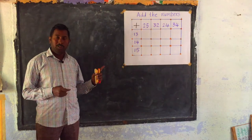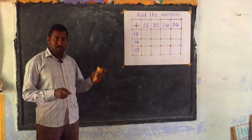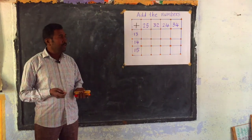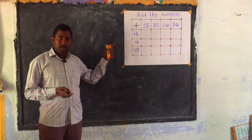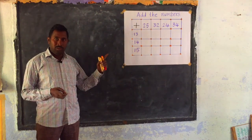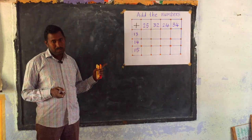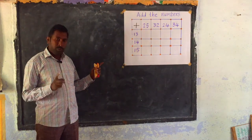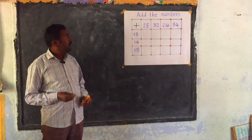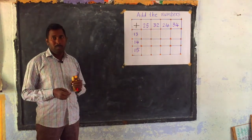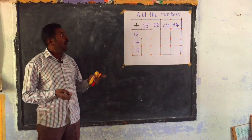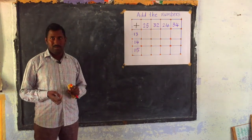You will see this activity chart in your textbook page number 55. All of you open your textbook, children, and find this activity chart. Did you find this activity chart in your textbook, children? In page number 55, you can find this activity. What is that activity name? Add the numbers.